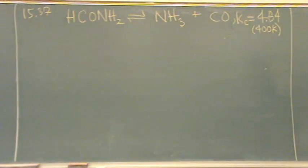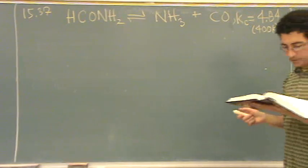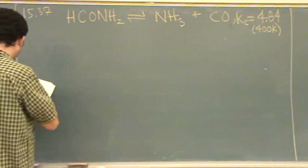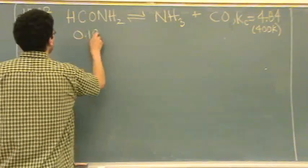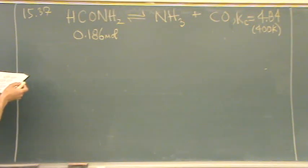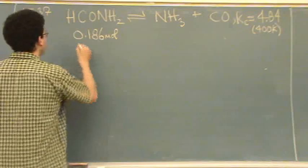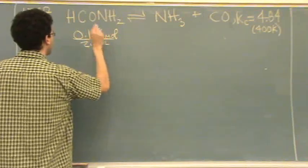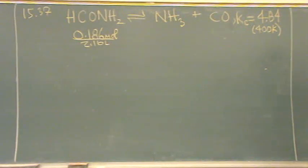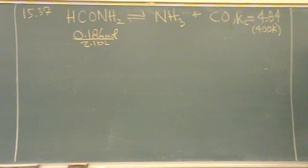What this problem wants is the total pressure at equilibrium. It gives you some initial information — 0.186 moles — and it also gives you the volume. In this case you won't have to change it to molarity, but I usually do. Since it wants the total pressure, if I get the total concentration at the end, I'll just convert it to pressure using the ideal gas law, because these are gases.